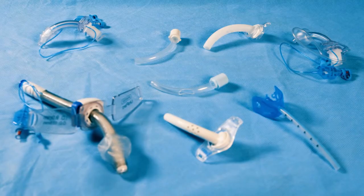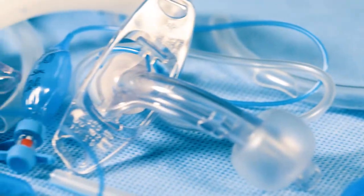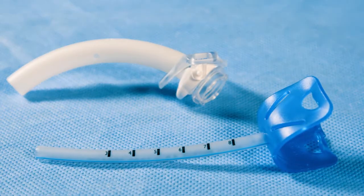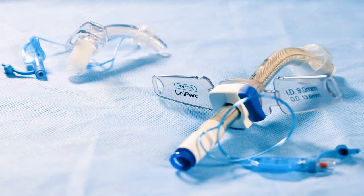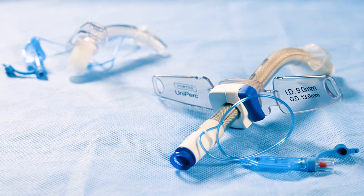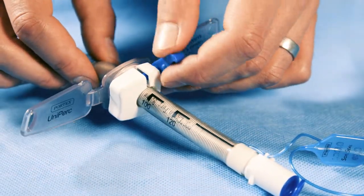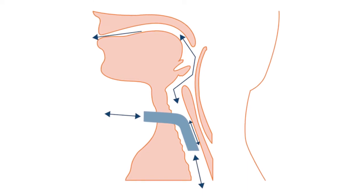Each different type of tracheostomy tube tends to be designed to perform a specific function. Tubes come in different shapes and sizes, mainly because different patients have different sized tracheas. Some tracheostomy tubes also come in different lengths, as some patients will have a greater amount of tissue on the outside of the trachea, so it's important to have tubes that allow for that.